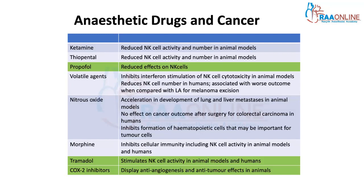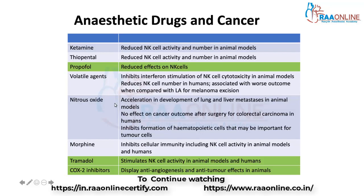In short, most anesthetic agents are immunosuppressive and reduce natural killer cell activity. Nitrous oxide, volatile agents, and morphine all seem to be detrimental as far as tumor recurrence and metastatic activity are concerned. The only drugs which do not seriously impact immune function and may not result in tumor retention and metastasis in animal models are propofol, tramadol, and COX-2 inhibitors, which are actually used for the treatment of some kinds of cancers.